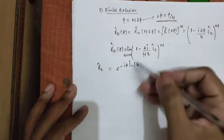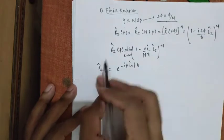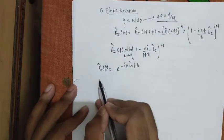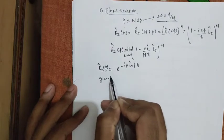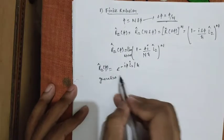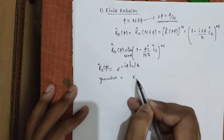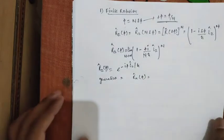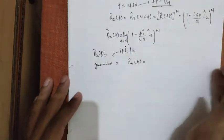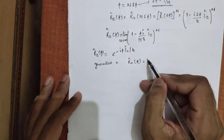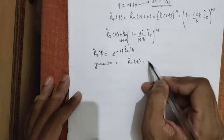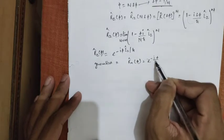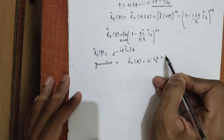So from here, to generalize this, we can say that Rn phi for any axis, Rn phi say, e to the power minus i phi by h bar n dot L.